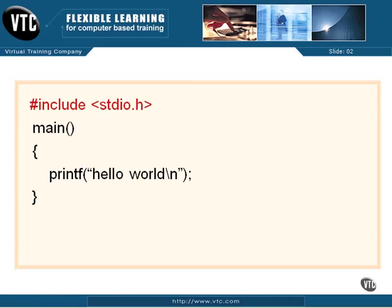Now we're going to take a look at each line of our Hello World program to make sure we truly understand what is going on and to give you an overview of what is happening in the program and what these different parts are called. You're going to see all of these different areas in more detail as we go through the other chapters, but I want you to have a good idea of these different sections and how they work together.